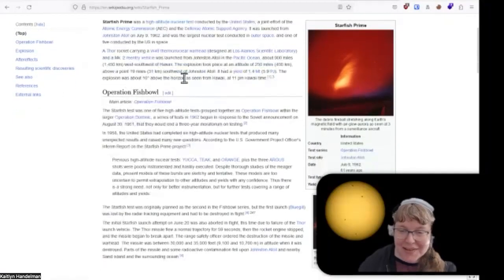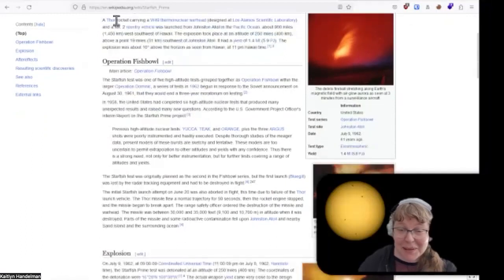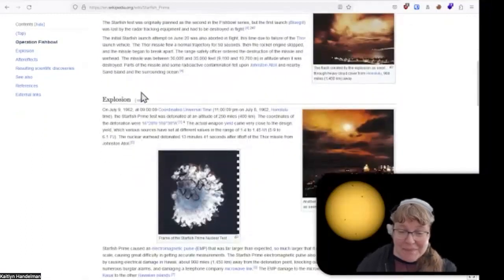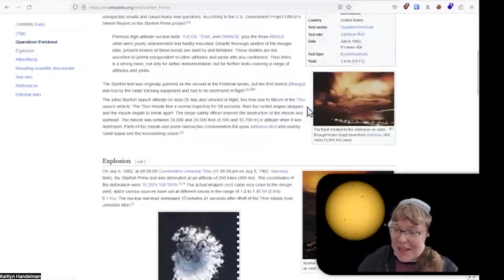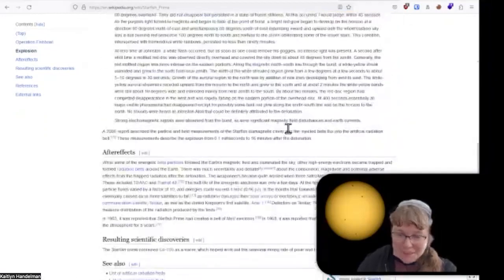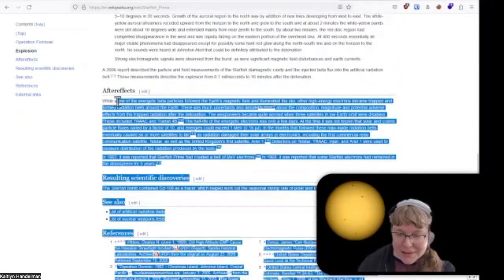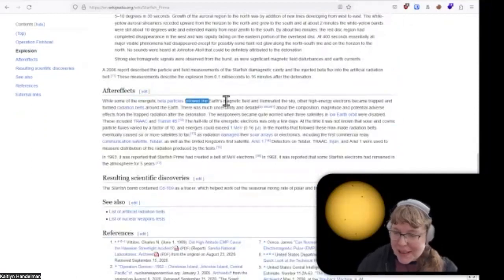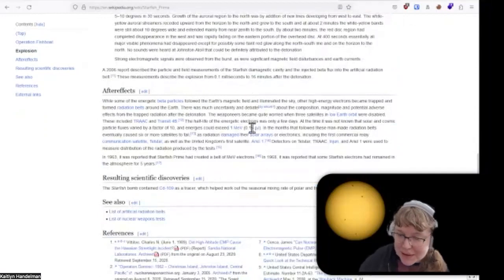So, yeah, it was a high altitude nuclear test. And apologies for just going to Wikipedia here. And yeah, so it exploded. That's what it looked like. It lit up the entire sky. And yeah, so the after effects, the beta particles came out. And I would imagine they would go through the Earth's magnetic field. The beta particles?